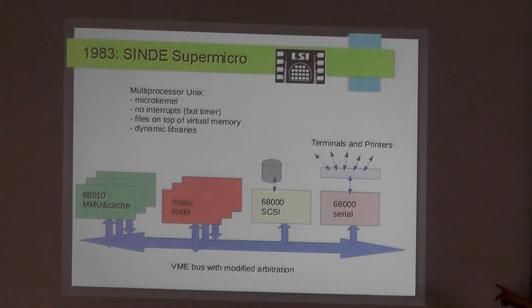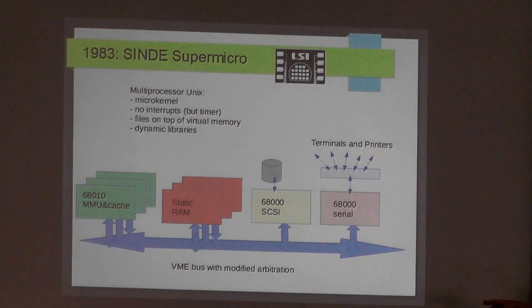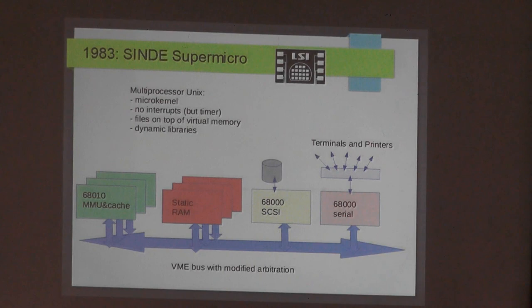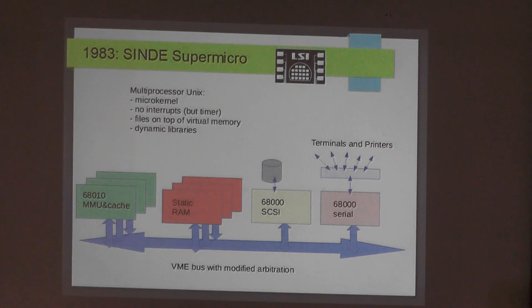The memory was static because my boss didn't believe I could design dynamic memory, so he gave it to someone else. I had a group of students designing the serial interface for terminals and printers. Interestingly, this machine had no interrupts — all I/O was handled locally and put into a queue in main memory; at some point the processor would fetch it. The only interrupts the main processors had were the time-slice timer. The SCSI board wasn't designed by any of us — SCSI was only defined in 1985, though we knew it was coming. By 1984 the government financing money hadn't arrived, so I dropped out of the project.